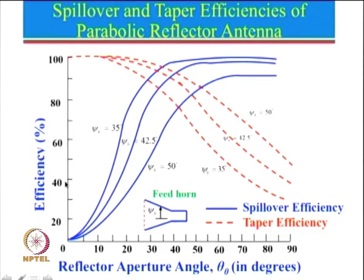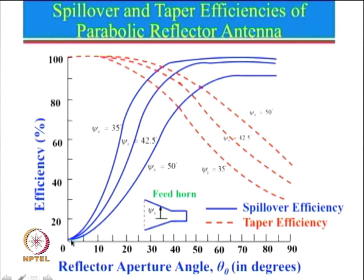We also looked at the plot of these two efficiencies. As the reflector angle increases, for the same beam pattern, spillover efficiency will be very high because there will be very little spillover. If theta_0 is very small — meaning the reflector itself is very small — spillover efficiency will be very poor. Taper efficiency is the reverse, and the product of the two is sometimes defined as aperture efficiency.